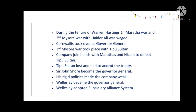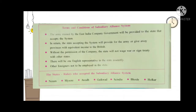To regain power, Wellesley introduced the Subsidiary Alliance System. The terms and conditions are on page number six of your textbook. The first condition states that states accepting the system will only be provided with an army trained by the East India Company. The second condition says that in return for the trained army, the state must give away a province along with its income. The third condition says that the state cannot initiate any war or sign any treaty with another state without the company's permission. The fourth condition says at least one English representative must be present in the state assembly.